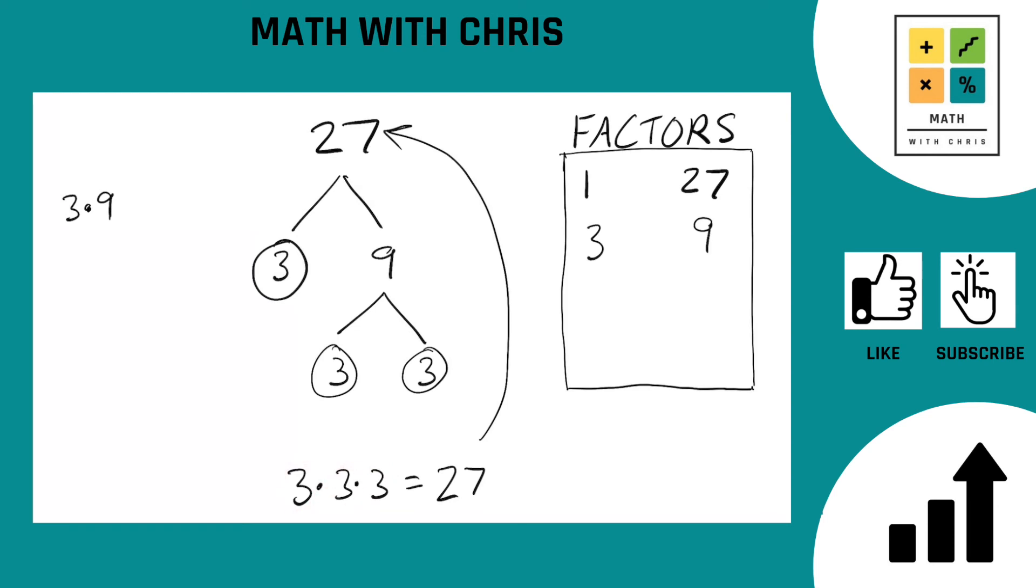3 times 3, we already got 9, so we are done. These are the only factors of 27, only four factors. There's a 1, a 3, a 9, and a 27.